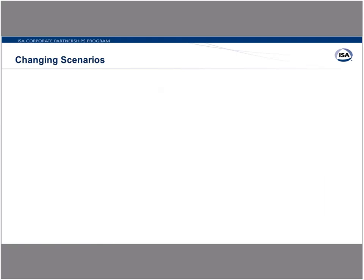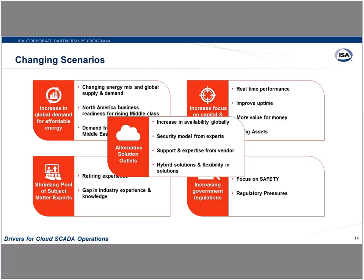And finally, there's a fifth changing scenario related to alternative solution outlets: where does this cloud come into play? The increase in availability globally — I might have people all over the world that need access to things much more than in the past. This includes giving us an improved security model from experts, support and expertise from the vendor directly, and vendors being able to support their field devices directly from cloud connected systems. Hybrid solutions are also an option — people don't want to jump in with both feet right away, so they're looking for flexibility in how they get there.